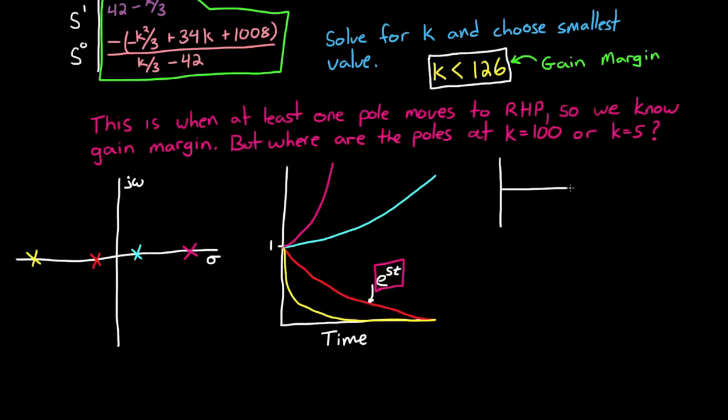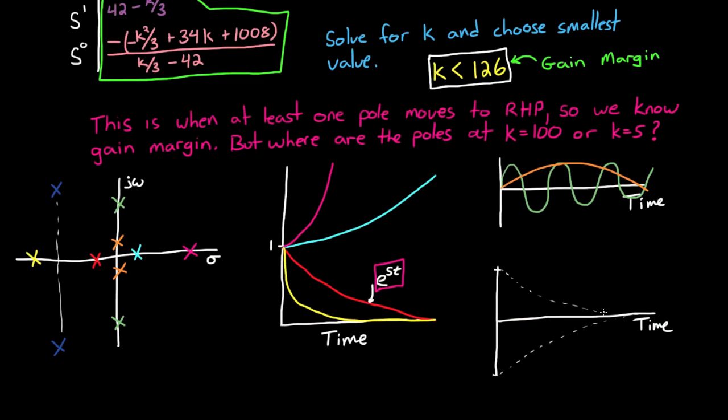Now when s is purely imaginary, the response is sinusoidal, since e to an imaginary number is a sinusoid. And the closer the imaginary roots are to the real axis, the slower the frequency, and so the slower the oscillations. And when there's a mix of the two, so that you have both a real and imaginary component, then the response decays at the rate associated with the real component and oscillates at the rate associated with the imaginary component. So you can have exponentially decaying and oscillating signals.